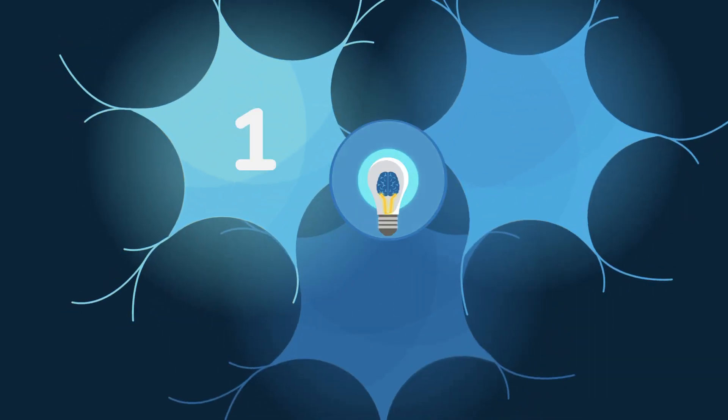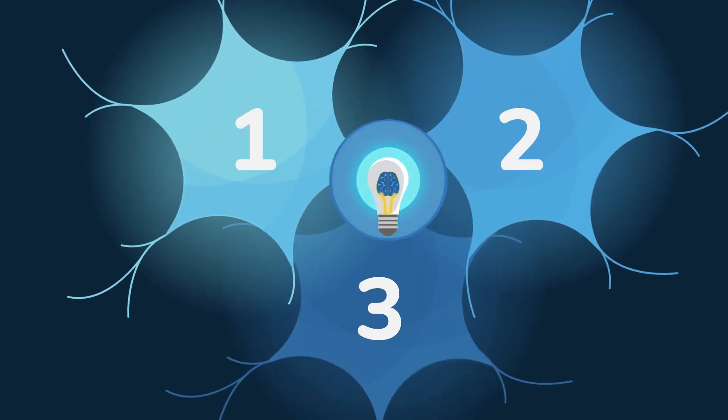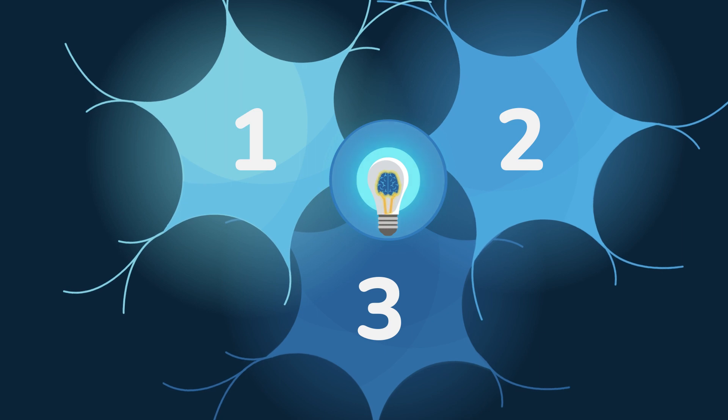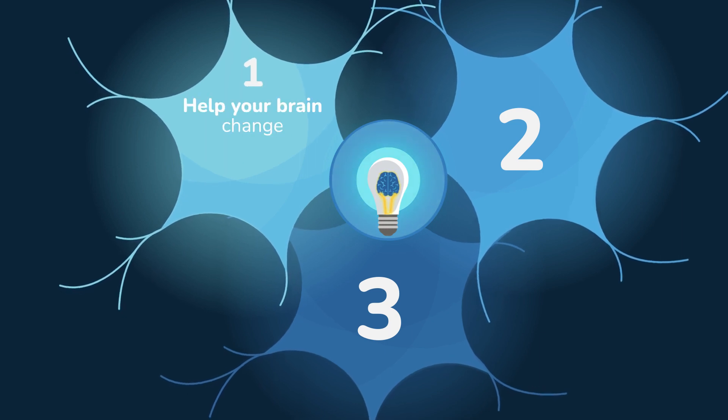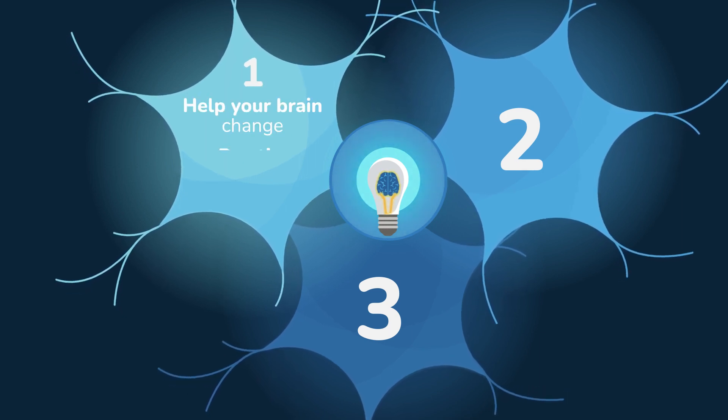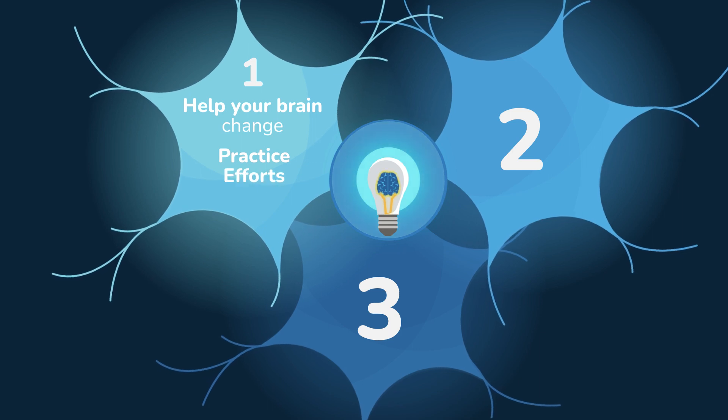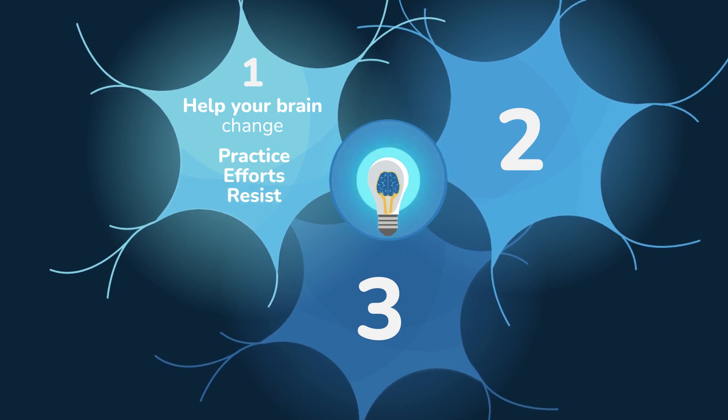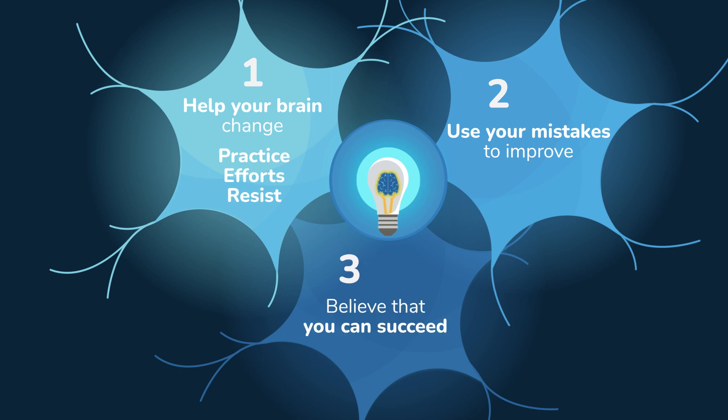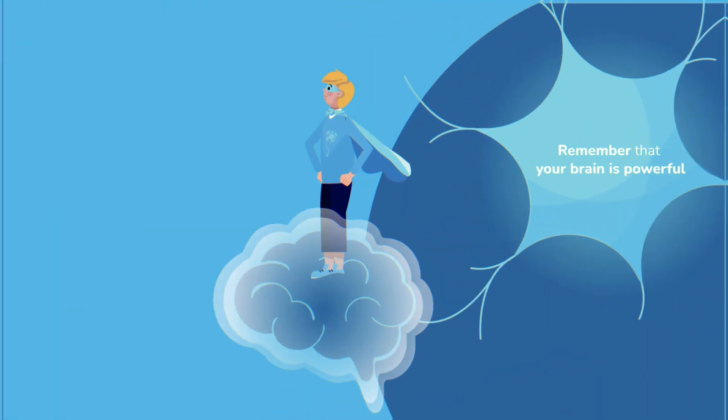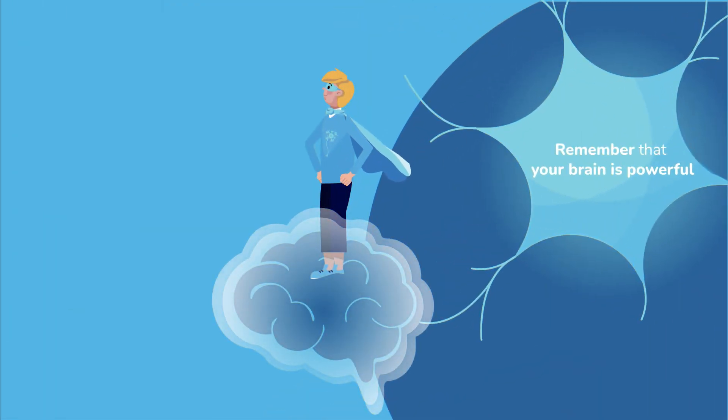In summary, you now know that in order to learn, your brain must change. To improve and get better, you need to help your brain change by practicing repeatedly, making efforts and resisting traps. Use your mistakes to improve by trying to understand them. Believe that you can succeed to get your brain into action. Remember that your brain is powerful and that you are in control of it. You can help it to learn better.